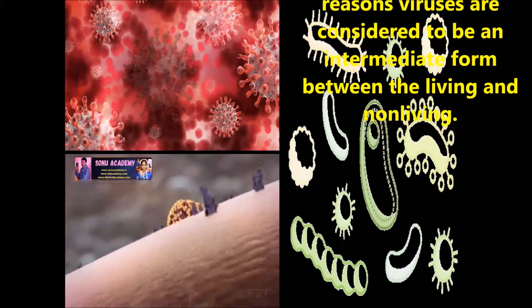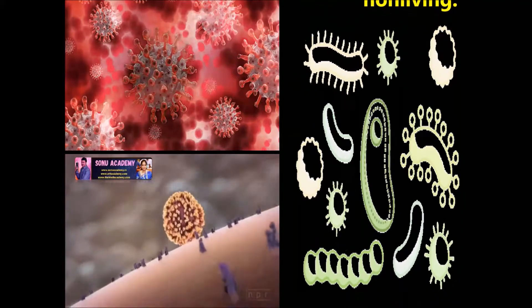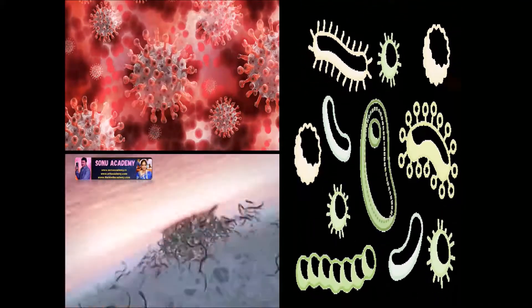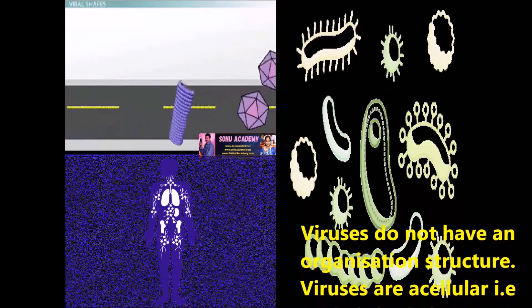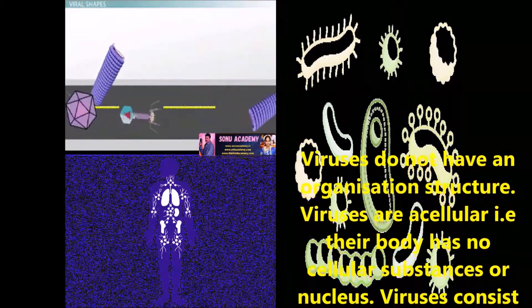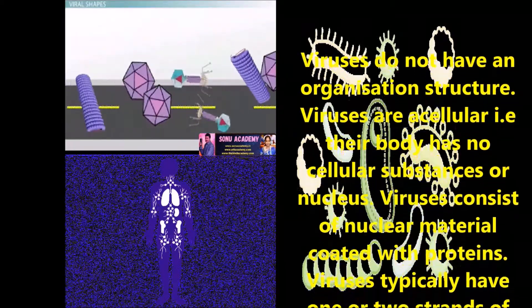Outside the living cell, viruses behave as a non-living thing. Due to all these reasons, viruses are considered to be an intermediate form between the living and non-living thing. Children, now let us discuss the structure of virus. Viruses do not have an organized structure. Viruses are acellular, that is their body has no cellular substance or nucleus.